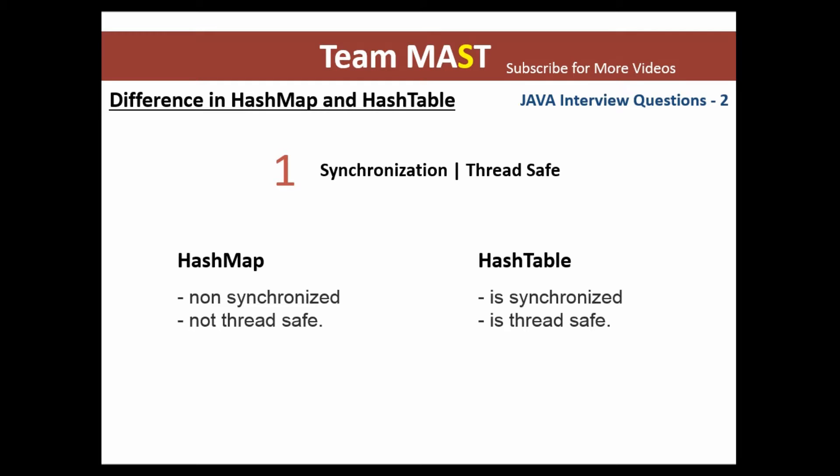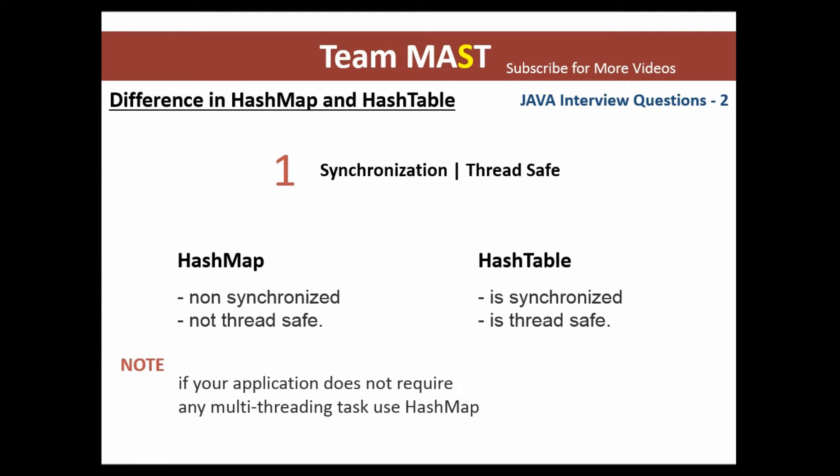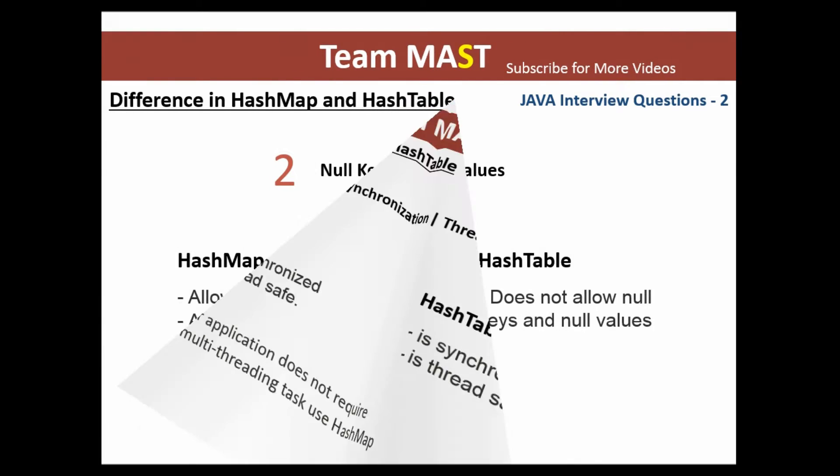The first difference is regarding synchronization and thread safety. A HashMap is not synchronized, whereas a Hashtable is synchronized. This means that if your application is multi-threaded, you should not use a HashMap — use a Hashtable for thread safety.